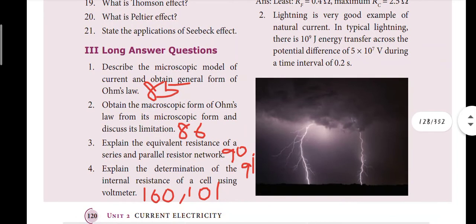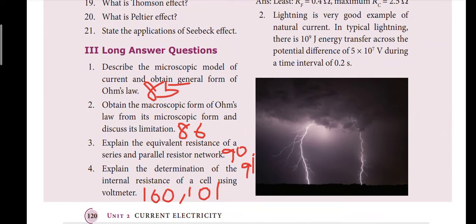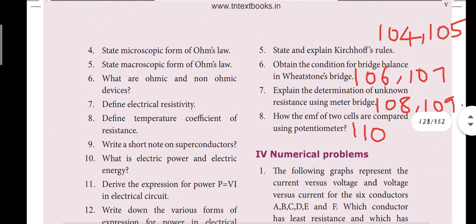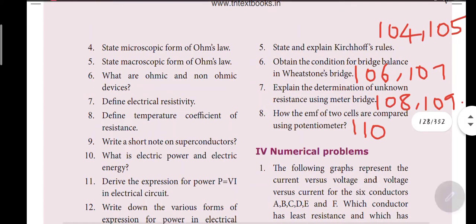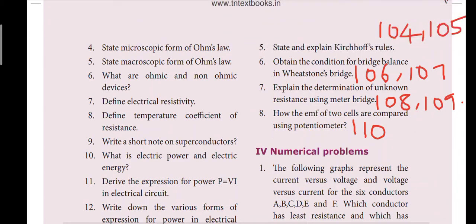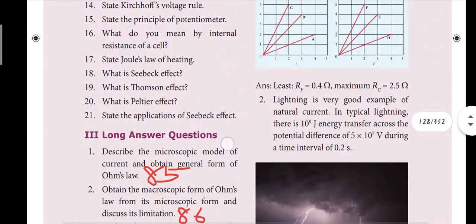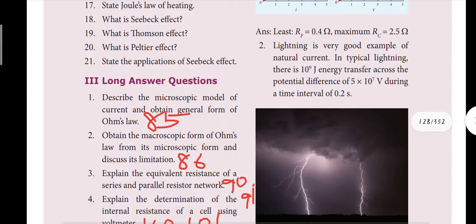First, derive the microscopic model of current, page number 85. The first question and the sixth question Wheatstone bridge are very important. The eighth question - how the EMF of cells are compared using potentiometer - is very important. Also the resistance in series and parallel, we have a three mark question.